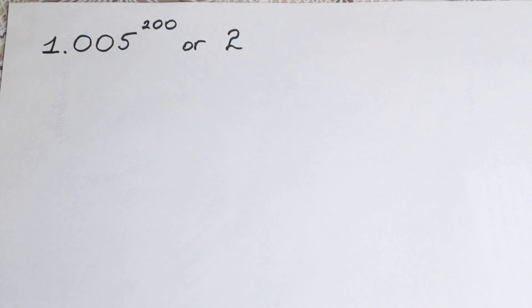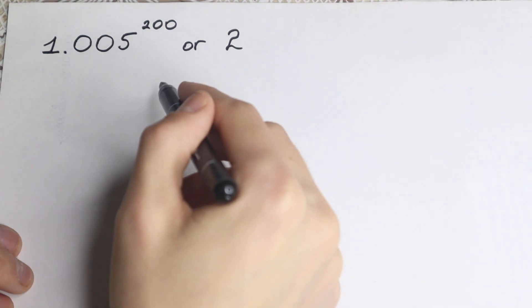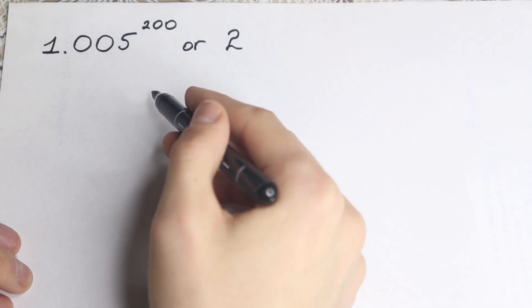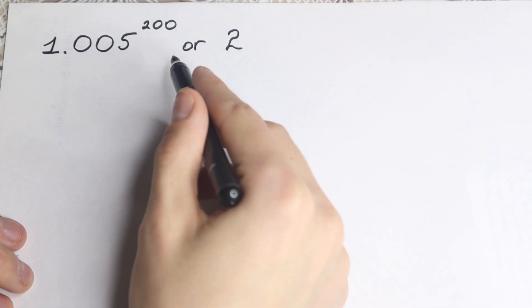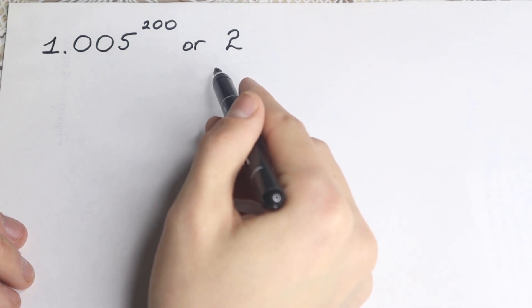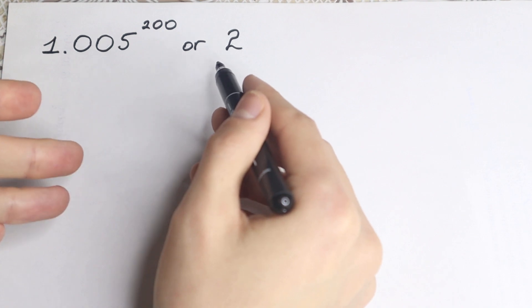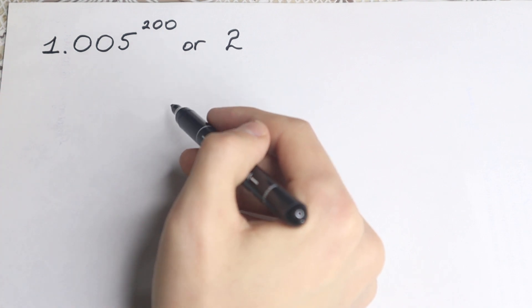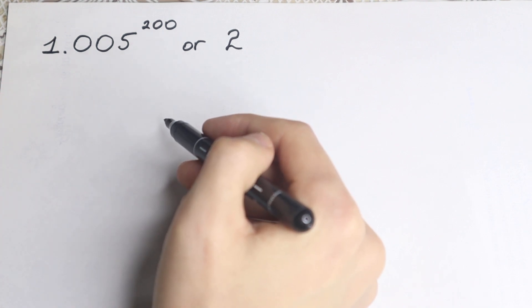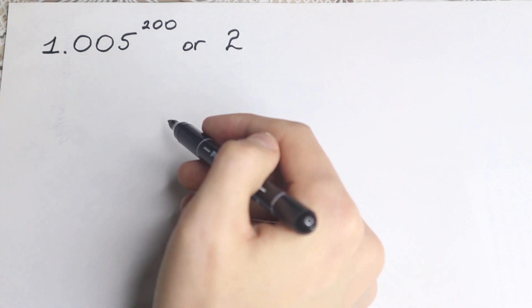Here is a problem today. Which one is bigger? We have 1.005 to the power 200 on the left hand side and 2 on the right hand side. Which one is bigger — left or right? You can write your suggestion in the comment section and we will check our answer here in just one minute.